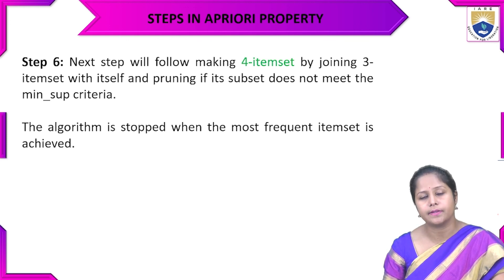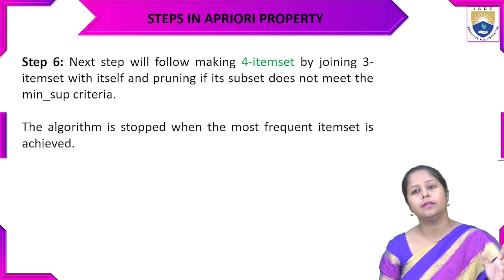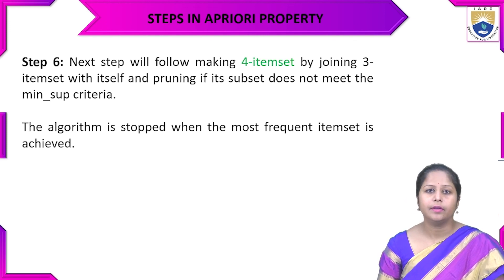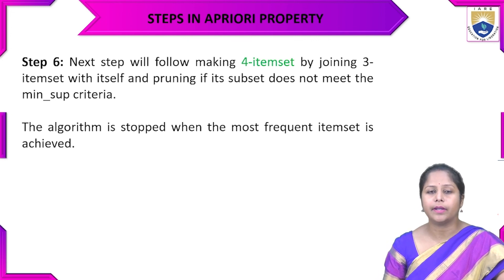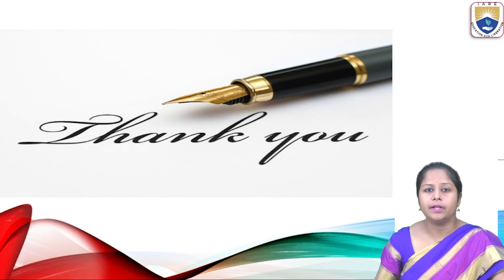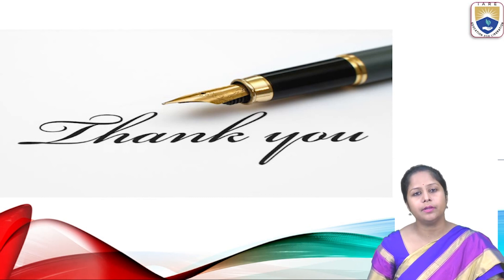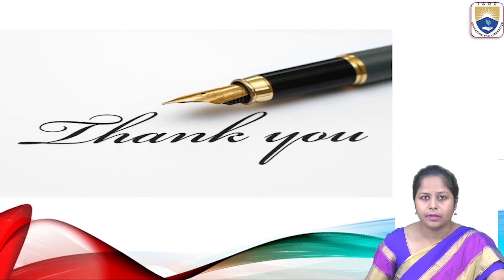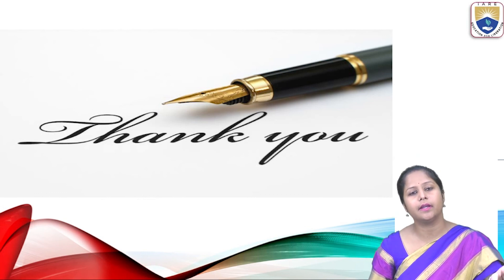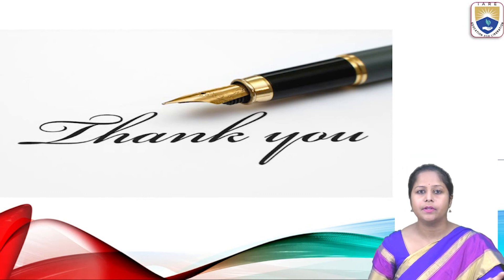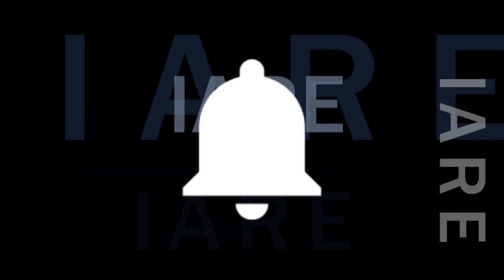The algorithm stops when the most frequent item set is obtained from the database transactions, yielding the final frequent item set. That covers the algorithm principles: candidate key generation, how pruning and joining steps work, the algorithm loops that implement join and prune. Thank you for watching — like, share, and subscribe, and hit the bell icon for more updates.